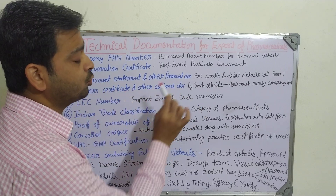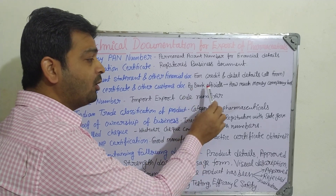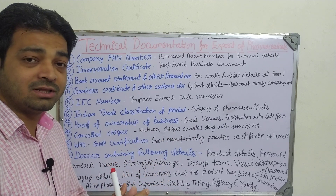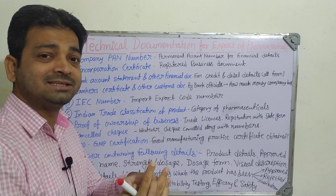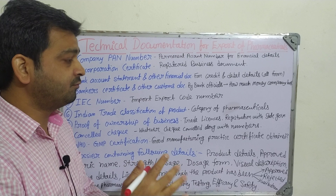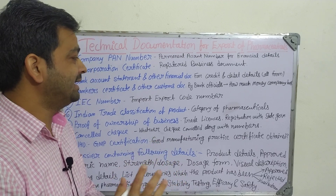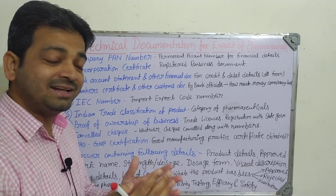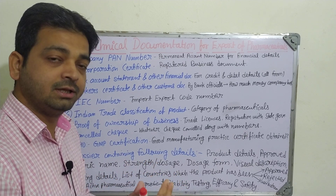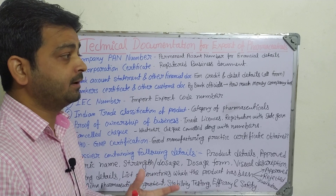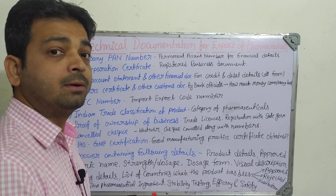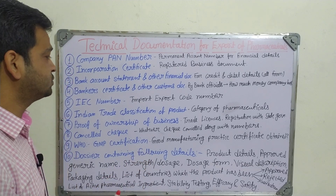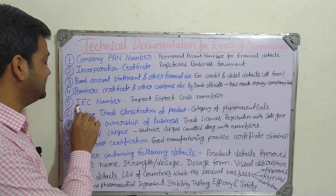The fourth one is the banker certificate and other customs documents provided by bank officials, showing how much money the company has — the turnover, how much is in fixed deposits, and what assets the company holds. This gives the authority an indication of whether it is a good company or not, because financial background is everything for any organization.